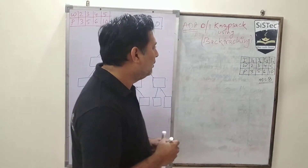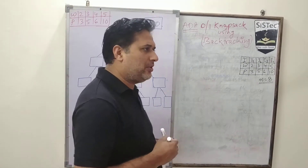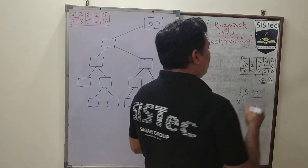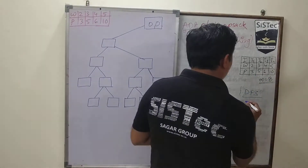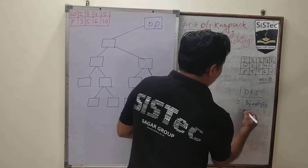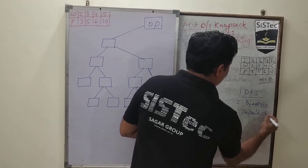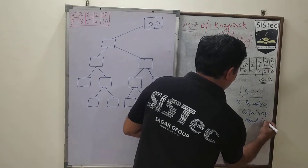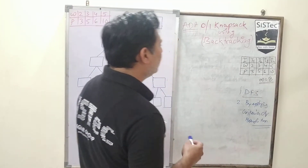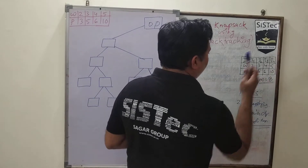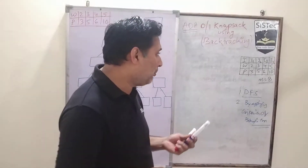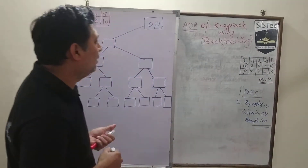As we know, backtracking generates the solution space tree in DFS manner. Then we will see how we will kill some of the nodes by applying criteria, or you can say some bounding function. We have given these 4 weights with their corresponding profit. This problem can be solved using the DDI approach. We will apply backtracking and see how we solve it.